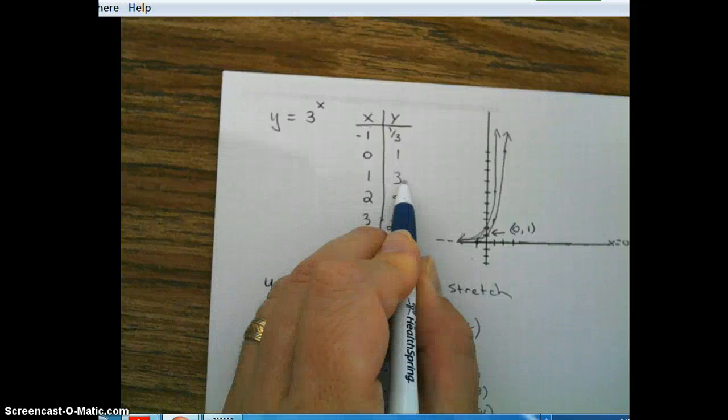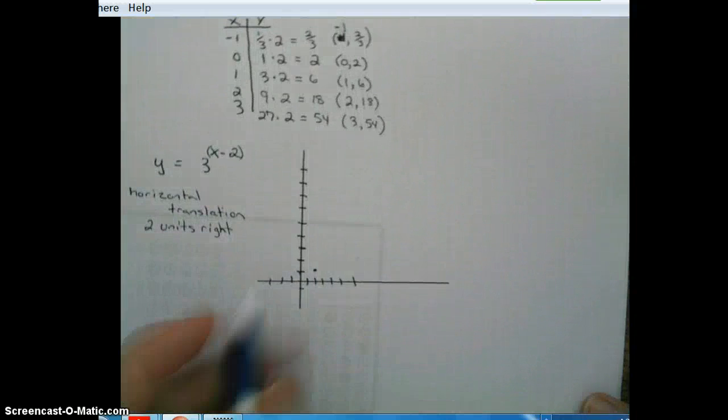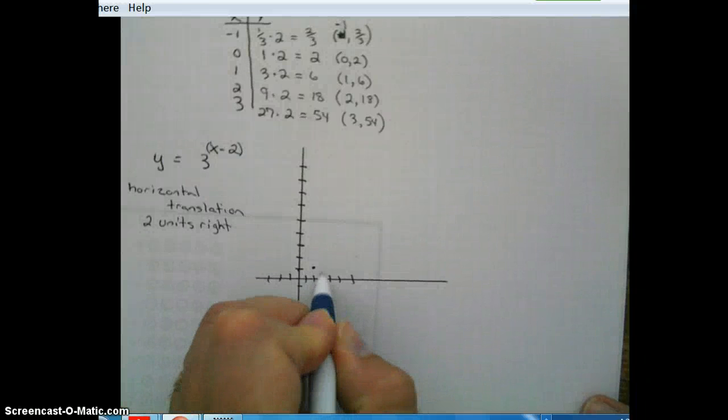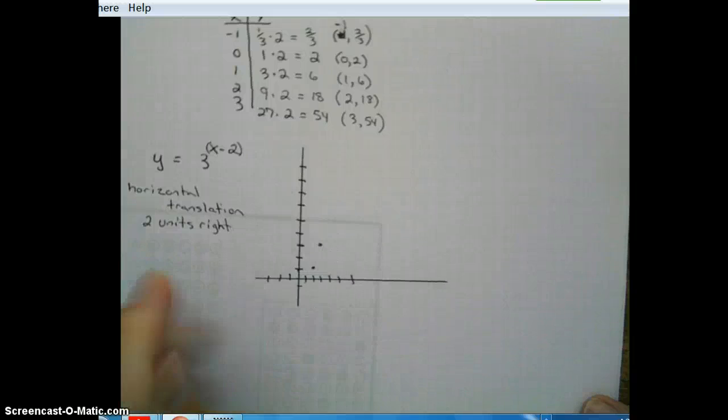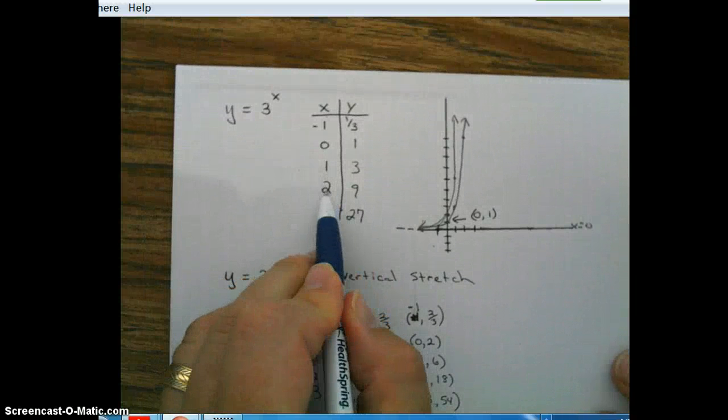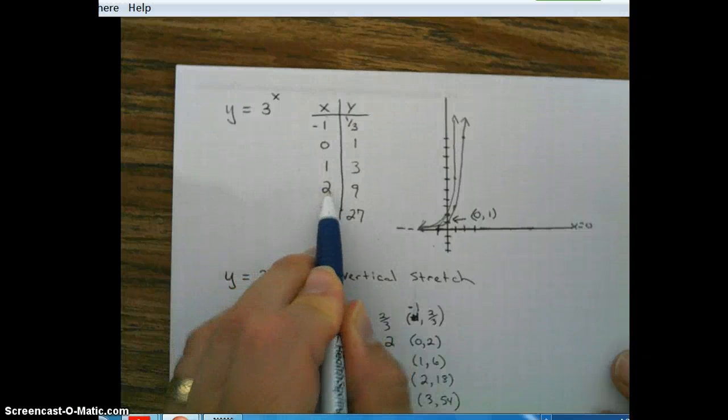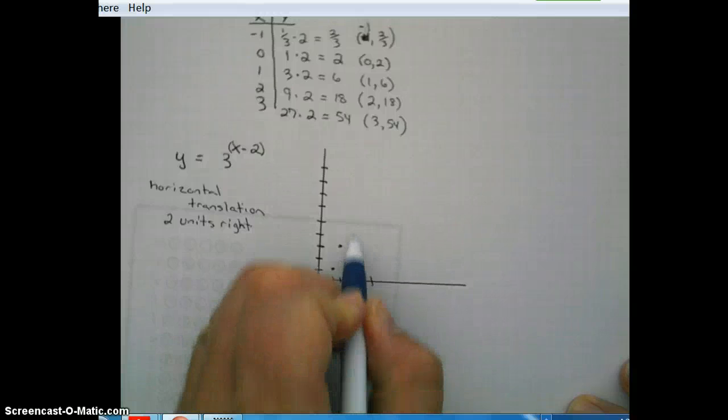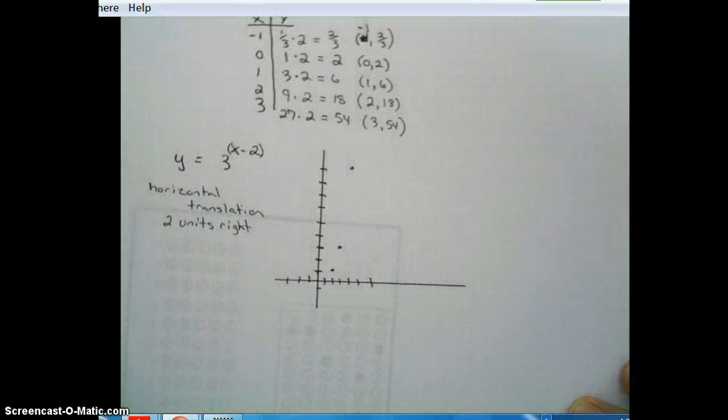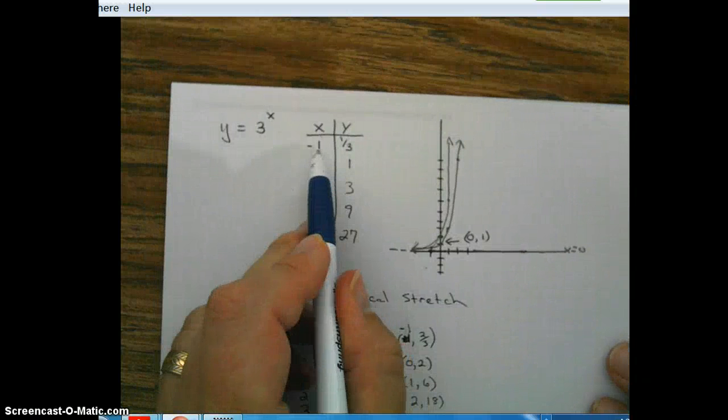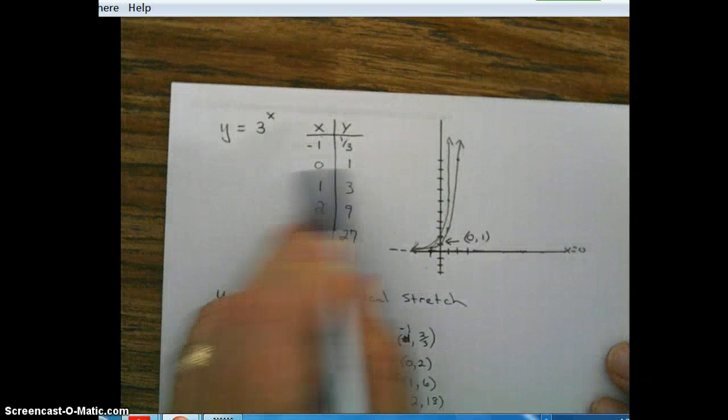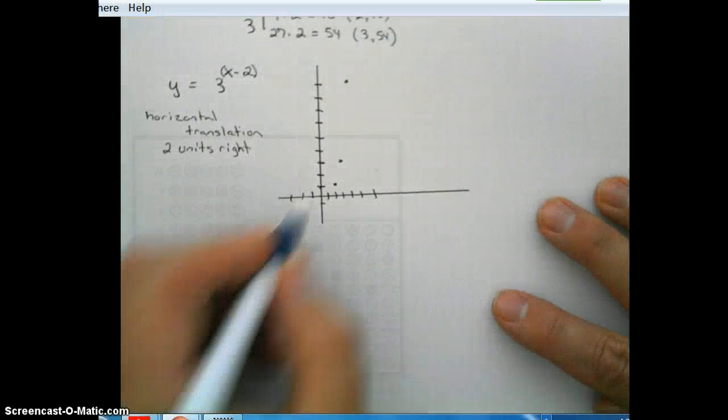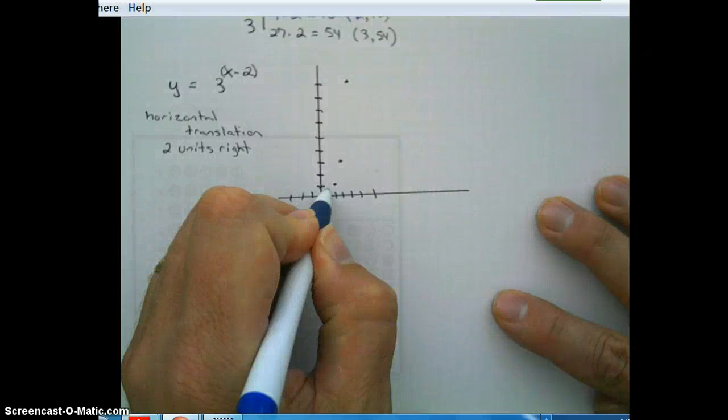So this would be 3, 3. 1, 2, 3. 1, 2, 3. Next one. 2 units to the right. 2 plus 2 is 4. So 4, 9. So 1, 2, 3, 4. And then we're going to go all the way up to 9. Let's go back down here. Negative 1 plus 2 is 1. 1, 1 third. So 1, 1 third. All right. So let's go ahead and draw this in.